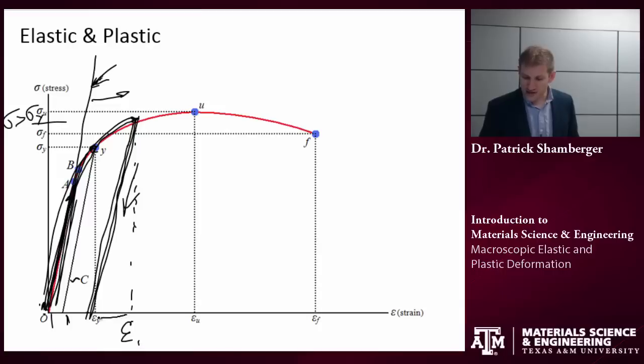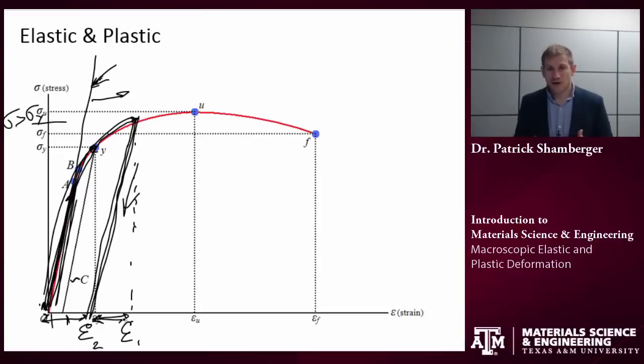When I remove that stress, I come back to some other point, strain 2. So what are these different parts? The distance from 0 to this strain 2, that's the permanent deformation that the material has undergone. So I would call that the plastic strain, the plastic deformation. This part here, the difference between strain 1 and strain 2 that was elastically recovered, that's the elastic strain in the system.